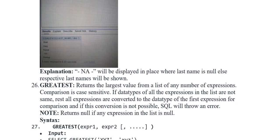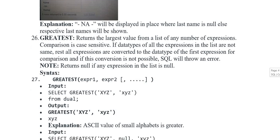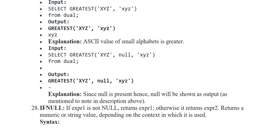Iskeba aata hai GREATEST - return the largest value from a list of any number of expressions. Comparison is case sensitive. Agar data types of all expressions in the list are not same, rest all expressions are converted to data type of the first expression for comparison, and if this conversion is not possible, SQL will throw an error. Syntax: GREATEST(expression_1, expression_2). Input: SELECT GREATEST('xyz', capital and smallest letters) FROM dual. Output mein capital and smallest letters represent kia gaya.